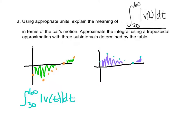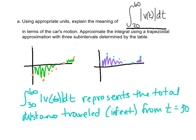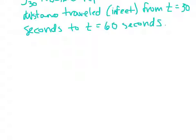So an acceptable answer on the AP test would be: the integral from 30 to 60 of the absolute value of v of t dt represents the total distance traveled in feet from t equals 30 seconds to t equals 60 seconds. Now it asks you to approximate the total distance, so the trapezoidal sum will have a graph.